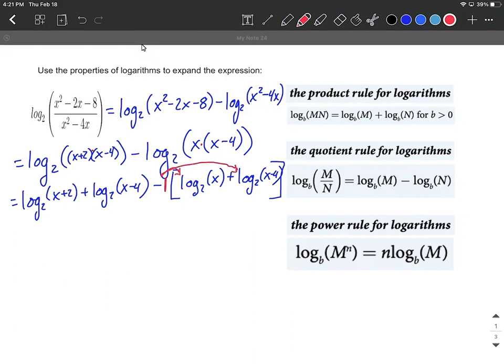So basically distribute to get rid of your brackets. So now where we're at is we have log base 2 of x plus 2, just bringing that along, same thing log base 2 of x minus 4, but we've distributed that negative, so we're subtracting away the log base 2 of x, and we're subtracting away log base 2 of x minus 4.